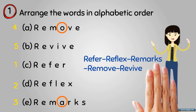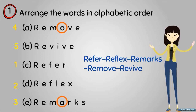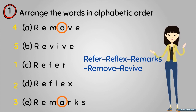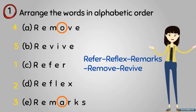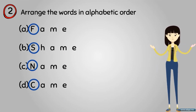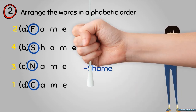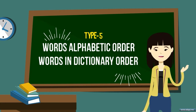In these types of questions, first check the first letter in alphabetical order; if all are the same, take the next letter, and so on. For example: Fame, Shame, Name, Came — the first letters are F, S, N, C. In alphabetical order: C, F, N, S — so no further checks are needed. The answer is Came, Fame, Name, Shame. These question types are also known as arranging words in dictionary order. Practice all these types with three or more examples.